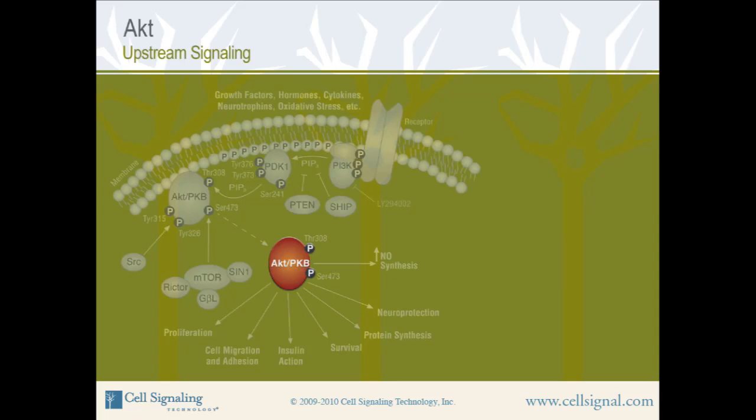Upstream Signaling of AKT. The following is an overview of how AKT signals in the cell. A number of receptors at the cell membrane signal through AKT, including many receptor tyrosine kinases (RTKs), cytokine receptors, and G-protein-coupled receptors (GPCRs).